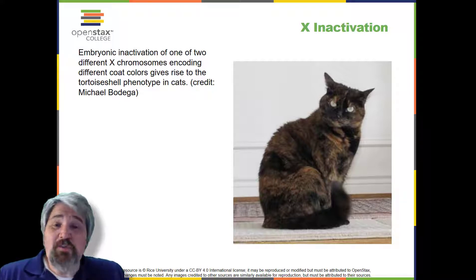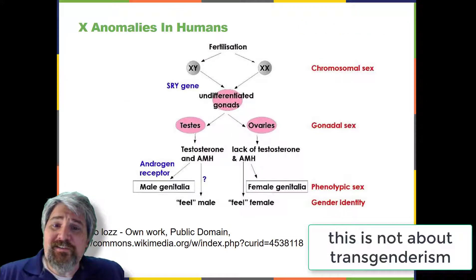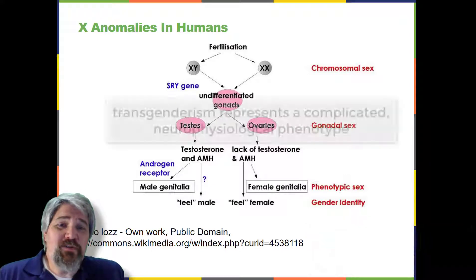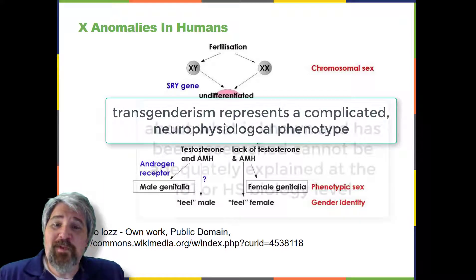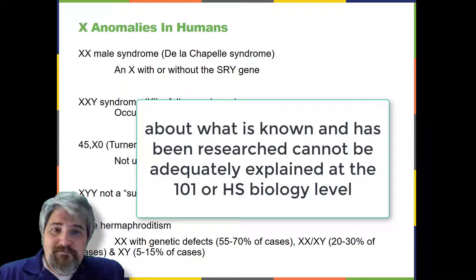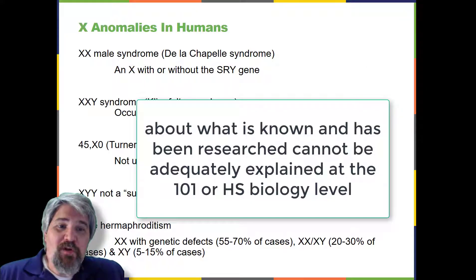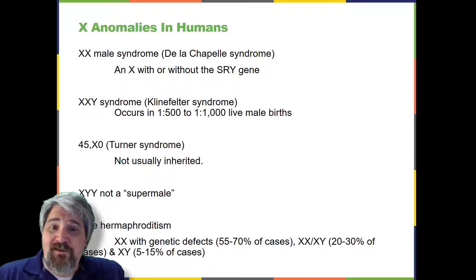As a result, X-chromosomal abnormalities are typically associated with mild mental and physical defects as well as sterility. If the X chromosome is absent altogether, the individual will not develop. Several errors in sex chromosome numbers have been characterized. Individuals with three X chromosomes, called triplo-X, appear female but express developmental delays and reduced fertility. The XXY chromosome complement, corresponding to one type of Klinefelter syndrome, corresponds to male individuals with small testes.